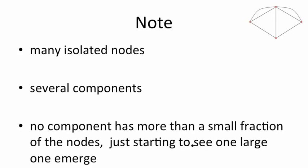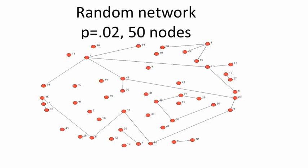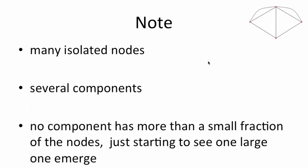A couple of things to note from our picture: when we go back here, there's a bunch of isolated nodes. The rest looks sort of tree-like, there's no cycles in it. So we see several components. No component has more than a small fraction. We're just starting to see one large component emerge.